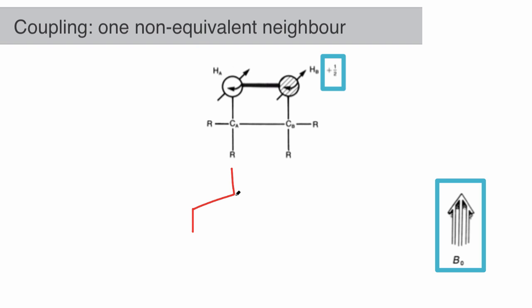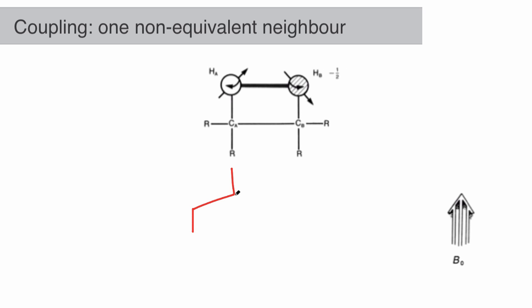The sample used in an NMR experiment comprises millions of molecules. Half of those molecules will have a neighboring proton with spin +1/2, the other half will have spin -1/2.